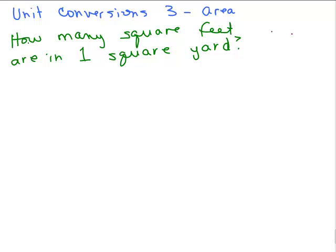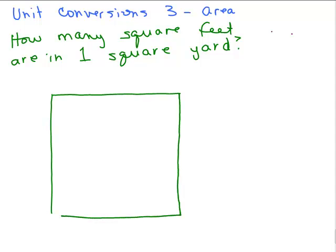So let's start off with this one: how many square feet are in one square yard? Well, what does a square yard mean? You've got basically a square where it's one yard on one side and one yard on the other side. So we say the area of this is one square yard, which you could write as one yard squared. That's how we usually write it.